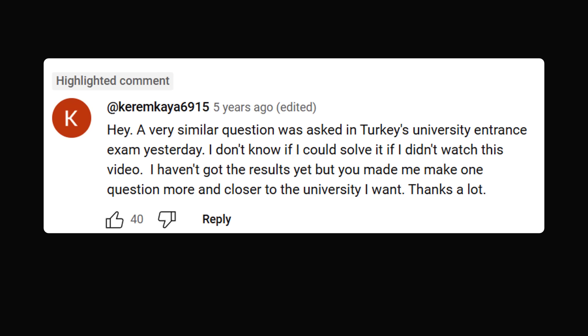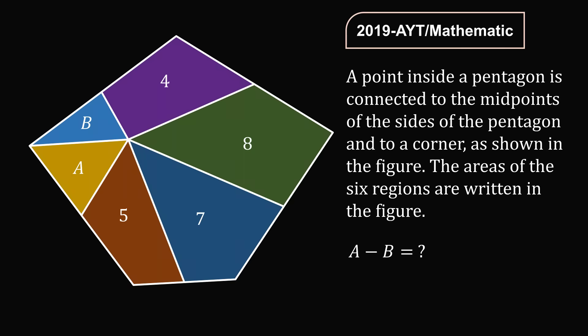What was the question at hand? I reviewed all of these old university entrance exams, and with the help of Google Translate, I was able to deduce that this was probably the question from the 2019 AYT. A point inside a pentagon is connected to the midpoints of the sides of the pentagon and to a corner, as shown in the figure. The areas of the six regions are written in the figure. The two regions connected to a corner are A and B, and the remaining four regions are 4, 8, 7, and 5. The question is to determine the value of A minus B.